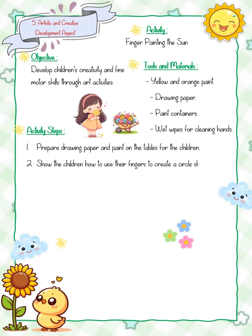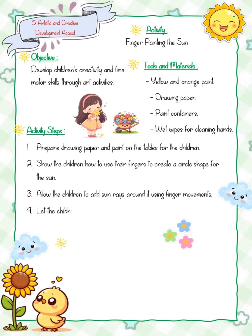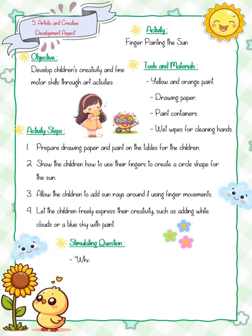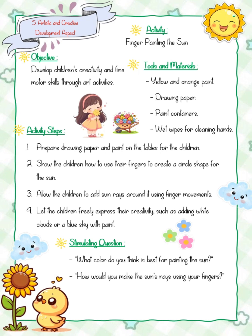Three, allow the children to add sun rays around it using finger movements. Four, let the children freely express their creativity, such as adding white clouds or a blue sky with paint. Stimulating questions: What color do you think is best for painting the sun? How would you make the sun's rays using your fingers? Can you add anything else to your picture to show a sunny day?